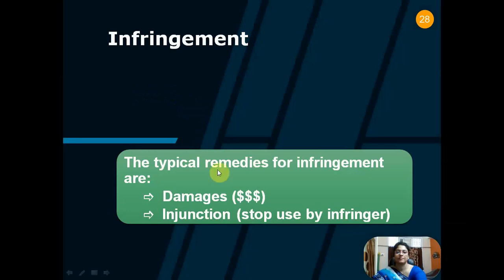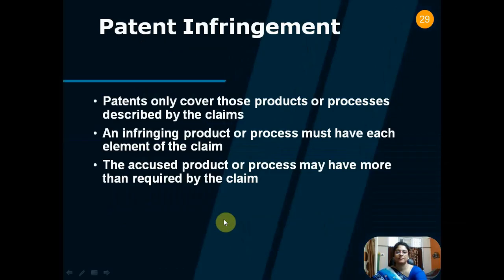The typical remedies for infringement are damages and injunction. When it comes to realizing the value of a patent, analyzing whether the technology currently used is vital to almost every available patent monetization option is very important. The basic principle of determining whether a piece of technology is infringing a patent is to construe the patent claim for scope and meaning, and then compare the claim to the accused product to determine infringement. Infringement of a patent claim requires that each and every claim element must be present in the accused product.